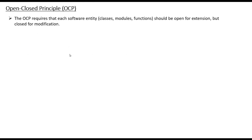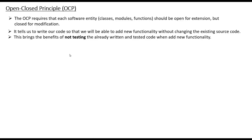The Open and Closed Principle states that each software entity — like classes, modules, and functions — should be open for extension but closed for modification. What does it mean? It actually means that we should be able to write our code so that we can add new functionality without changing the existing source code. The benefit it brings to our development process is that we don't need to re-test already written and tested code when adding new functionality.